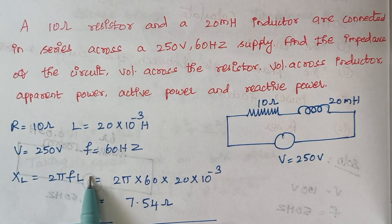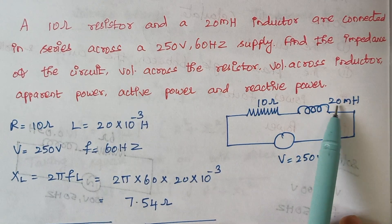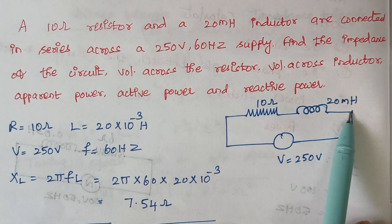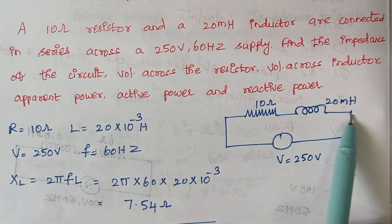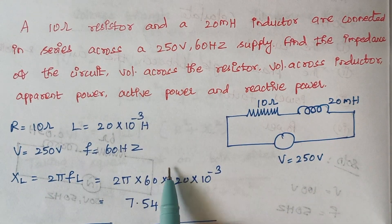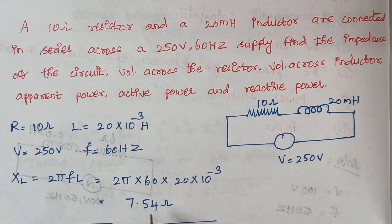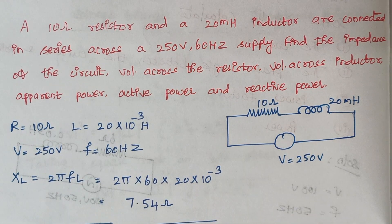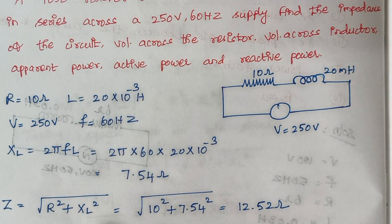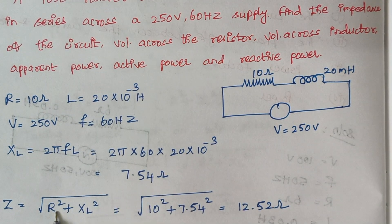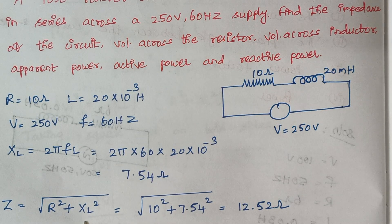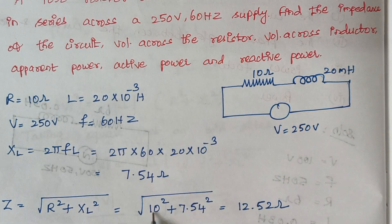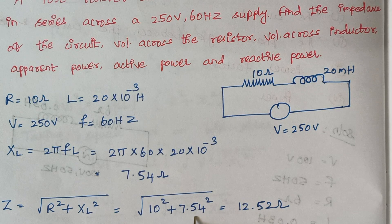The value of F is given, and the value of L is also given — 20 millihenry, which is 20 × 10⁻³. Substituting gives XL = 7.54 ohms. Then calculating impedance using the square root of R² plus XL², substituting the known values gives Z = 12.52 ohms.